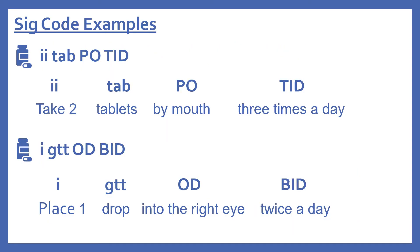Now we'll look at some examples of SIG codes. If you have a prescription that reads 'II tab PO TID,' this means take two tablets by mouth three times a day. II is two, tab is tablets, PO is by mouth, and TID means three times a day.